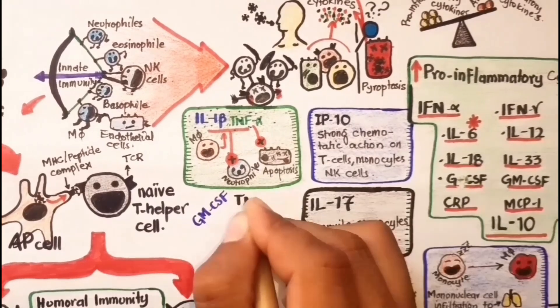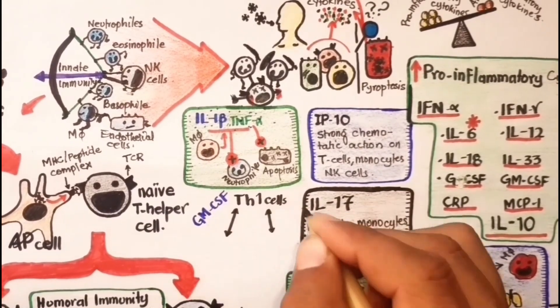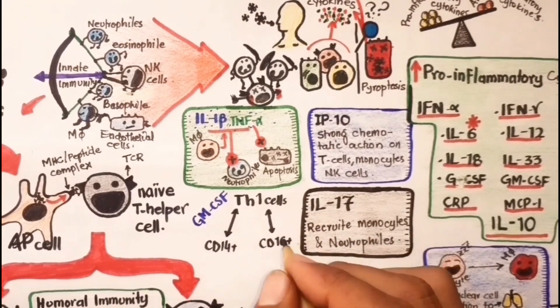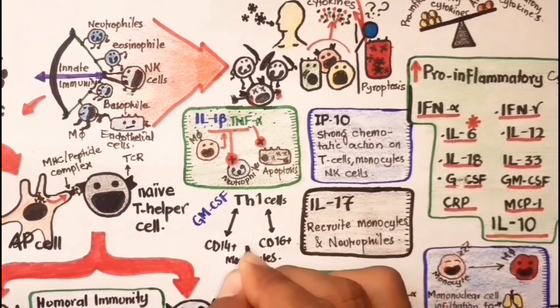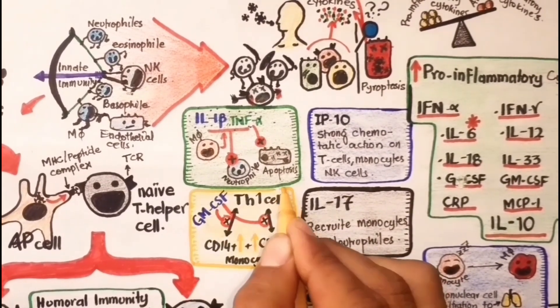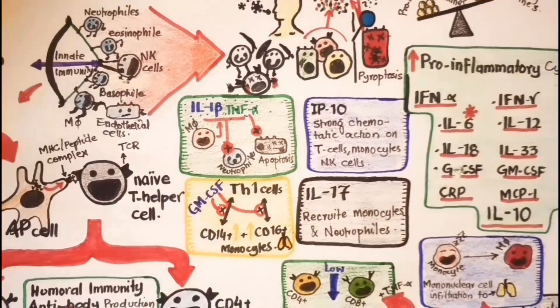GMCSF mediates relevant intracellular communications between pathogenic T helper type 1 cells and CD14+ and CD16+ monocytes. High numbers of CD14+ and CD16+ monocytes are detectable in COVID-19 patients with severe lung involvement, where these cells actively participate in induction and amplification of tissue infiltration by macrophages.